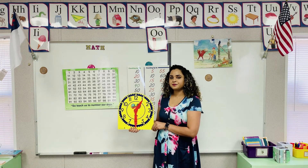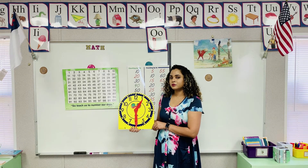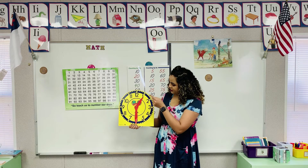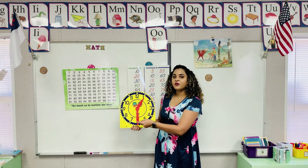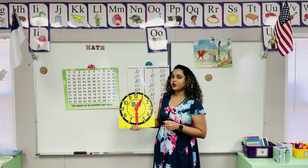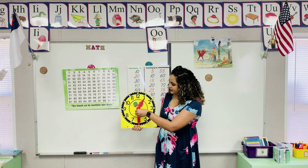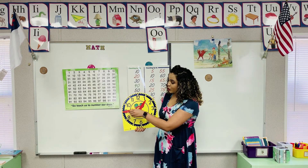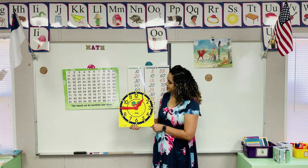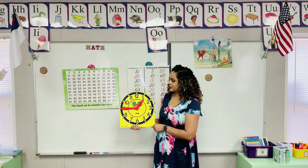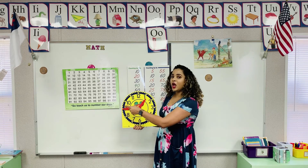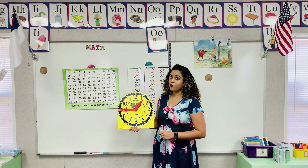What time is it? Let's count the minutes. 5, 10, 15, 20, 25, 30. It is 1:30. And if the minute hand goes on the 9, what time is it? Let's count the minutes. 5, 10, 15, 20, 25, 30, 35, 40, 45. It is 1:45.